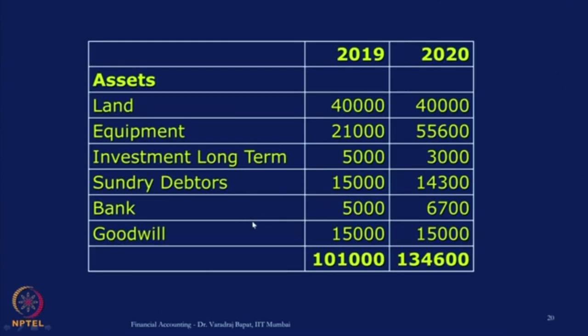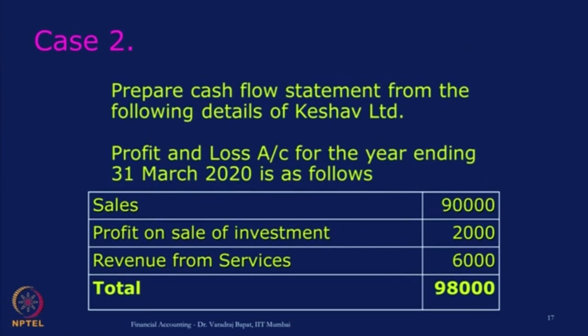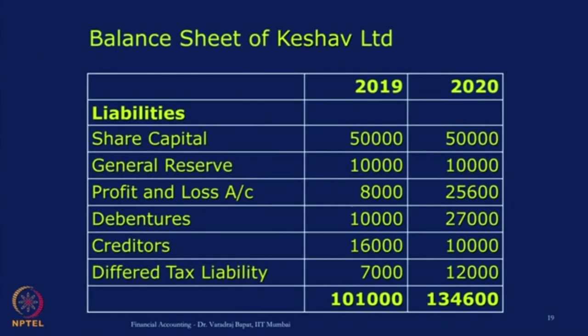Using this information you are required to prepare the cash flow statement. How shall we go about it? You all know that if there is a change in the balance sheet between the two years, that should be considered as a likely item of impact on cash. So let us start with the balance sheet — take every item and we will mark it as inflow or outflow, and also as O, I, or F if we feel that some movement has happened.